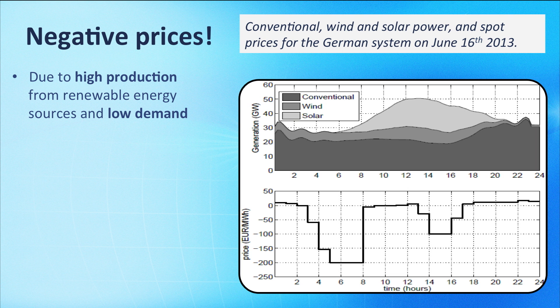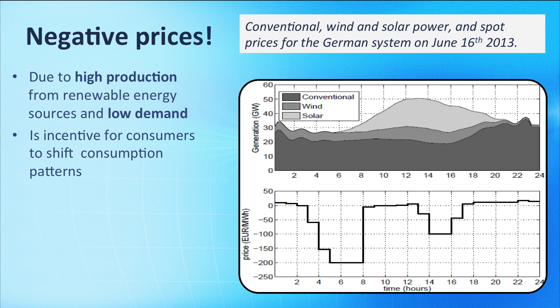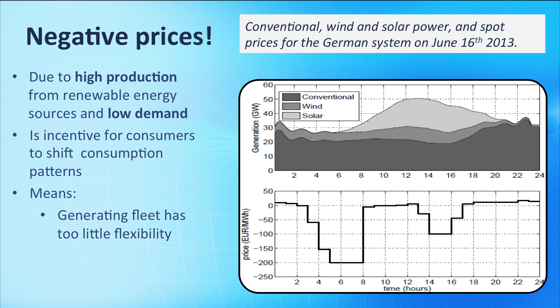Negative prices were first introduced on the German market, followed by France and Austria. It should be stressed that negative prices create an economic incentive for consumers to shift their consumption patterns to capture the opportunity of being paid. At the same time, the emergence of negative prices shows that the generating fleet has too little flexibility and/or that grid interconnections are insufficient within a market area.